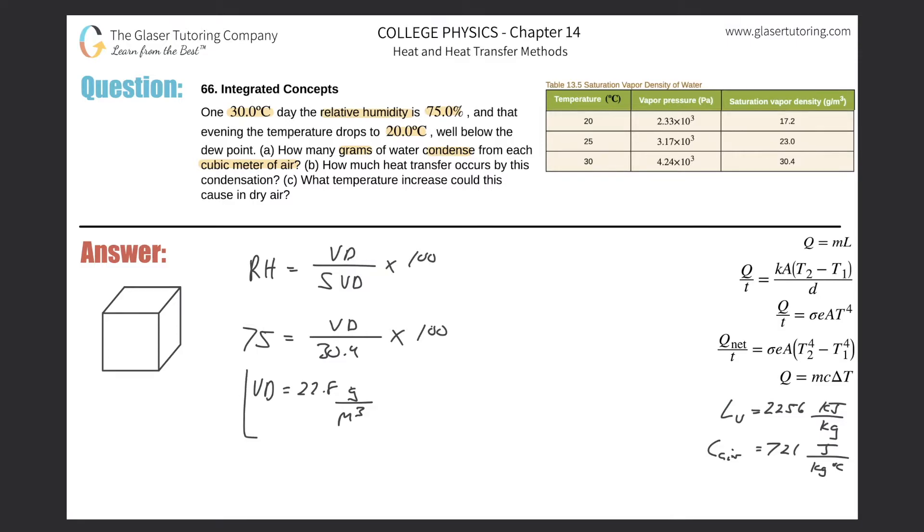So what that means is, on a day that's 30 degrees Celsius, and pretend that this is one cubic meter, one meter by one meter by one meter, that means that the mass of water vapor in the air is going to be 22.8 grams.